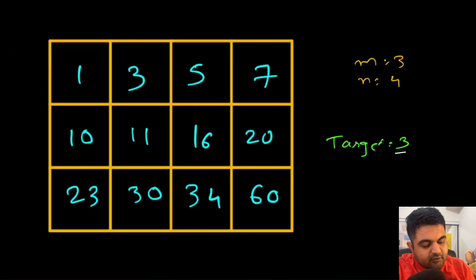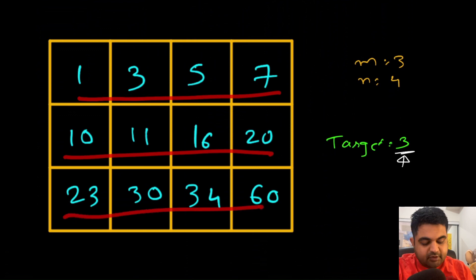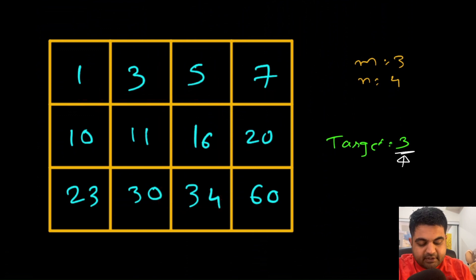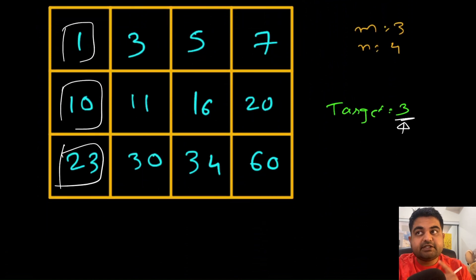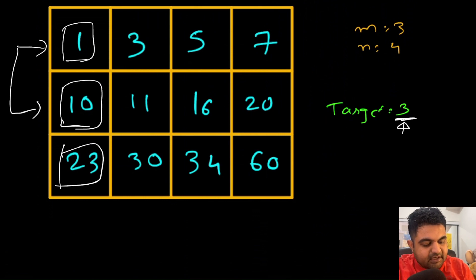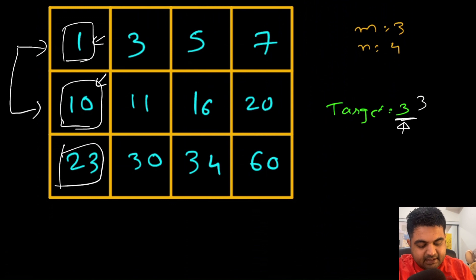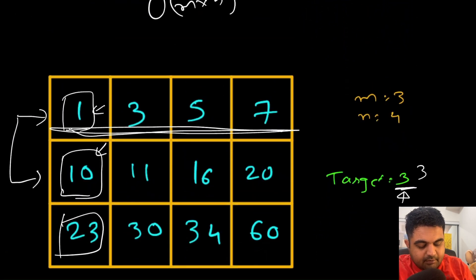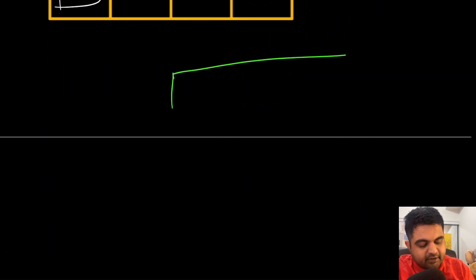We know the target value is 3, every row is sorted, and all columns are also sorted. One approach is to compare column values to determine under which row the target value should be present. We can see that comparing the first elements of each row, the target value 3 lies between row 1 and row 2, which means if the target is present, it has to be in the first row. Once we find that, we simply do a binary search on that row.